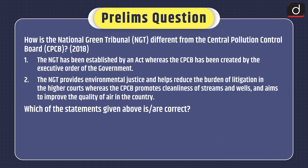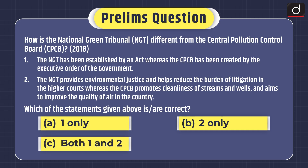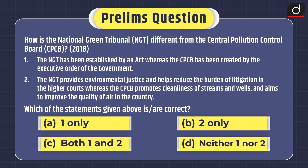Now it's time for the practice question. Prelims question: How is the National Green Tribunal or NGT different from the Central Pollution Control Board? This question was asked in the 2018 exam. Statement 1: The NGT has been established by an act whereas the CPCB has been created by the executive order of the government. Statement 2: The NGT provides environmental justice and helps reduce the burden of litigation in the higher courts whereas the CPCB promotes cleanliness of streams and wells and aims to improve the quality of air in the country. Which of the statements given above is or are correct? 1 only, 2 only, both 1 and 2, or neither 1 nor 2.